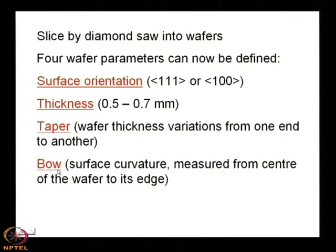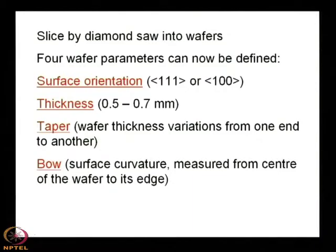The fourth parameter is bow — the surface curvature measured from the center of the wafer to its edge. Whether the wafer is completely flat or has a small curvature — it can be 1, 2, or 3 degrees. For example, a specification might read: 500 microns ±2 microns, 2 degrees off (100), meaning a curvature variation of 2 degrees from center to edge.